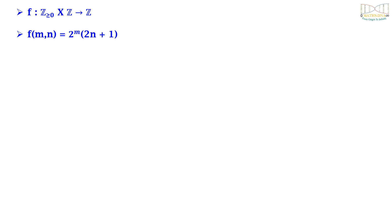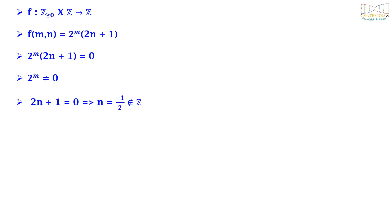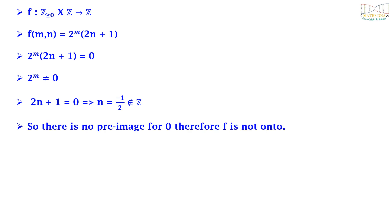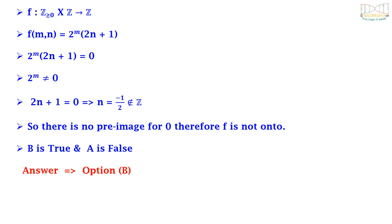Now f is a function from Z≥0 × Z to Z, and f(m, n) = 2ᵐ(2n+1). To check onto, consider the element 0 in the co-domain. We know 2ᵐ ≠ 0, so we would need 2n+1 = 0, which implies n = −1/2. But −1/2 does not belong to Z. Therefore 0 in the co-domain has no preimage, so f is not onto. Thus option b is correct — f is 1-1 but not onto.